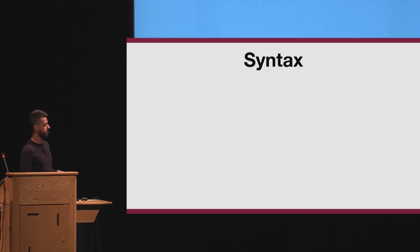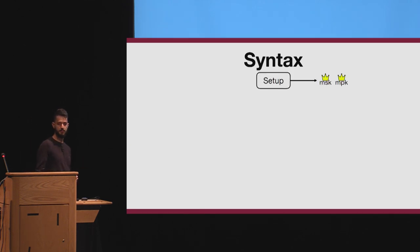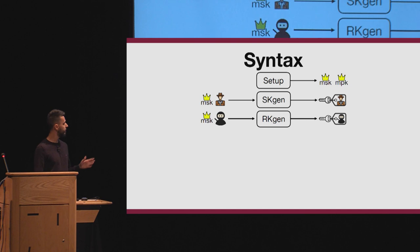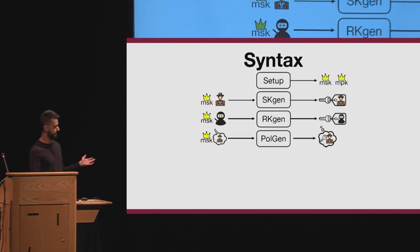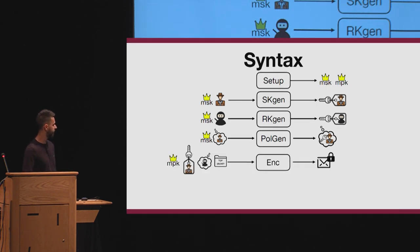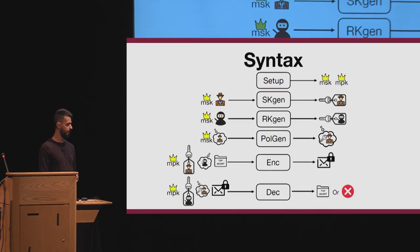The algorithms are as follows. There is a Setup algorithm that generates the master public key and master secret key, the latter used by the authority to generate keys. Then there are two key generation algorithms: one for the sender, which generates the encryption key for sender attributes, and one for the receiver, which generates the decryption key for receiver attributes. There is a third algorithm to generate the key for the policy — the decryption key containing the policy. Then there are standard encryption and decryption algorithms: encryption takes the encryption key for attributes, the policy, and the message to produce a ciphertext; decryption takes the two keys (one for attributes, one for policy) and the ciphertext, returning either the message or an error.